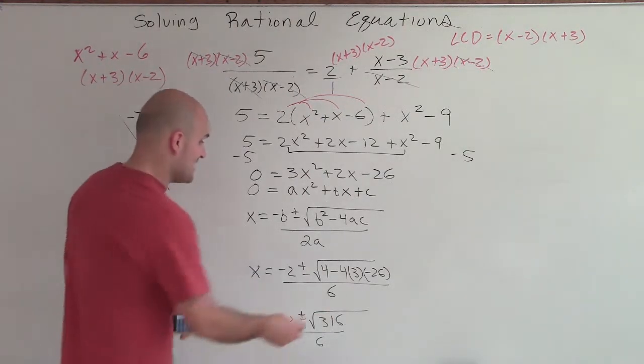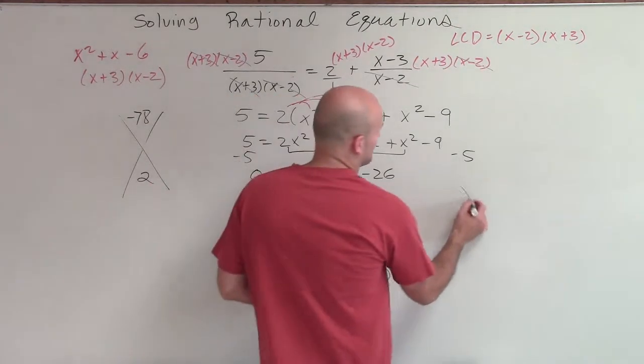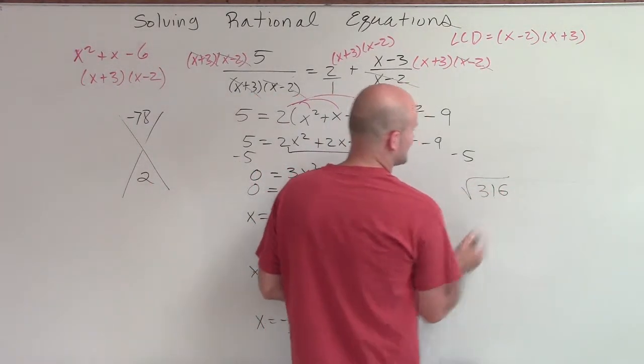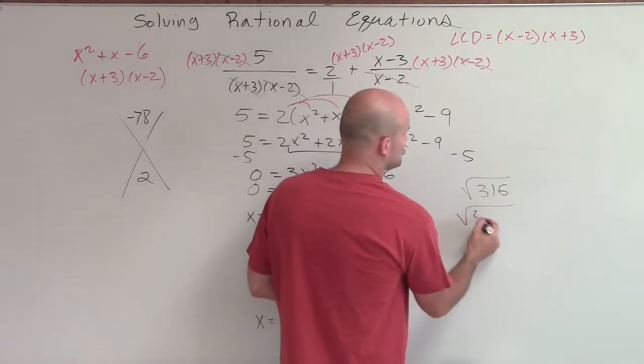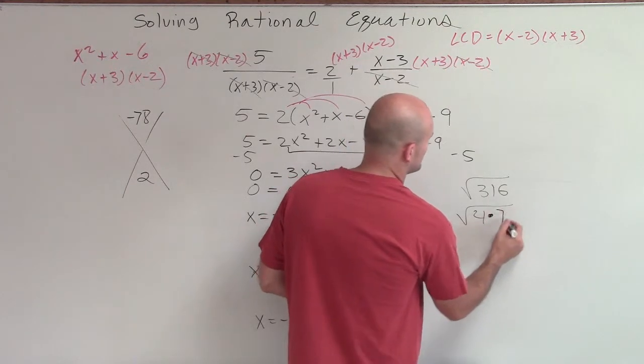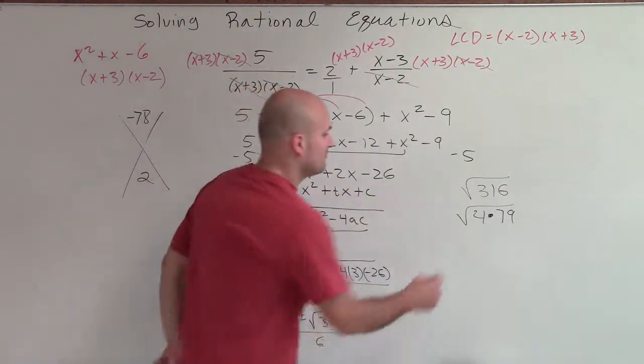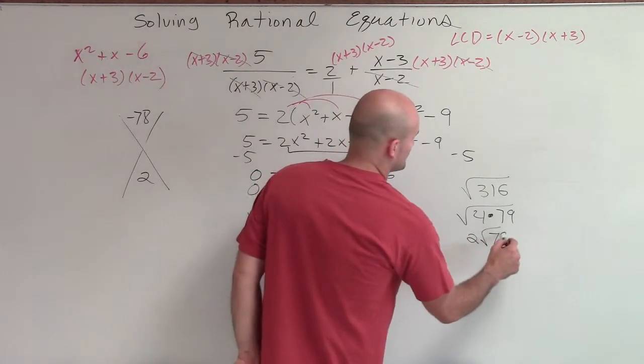Yes, I can simplify this. I can actually break this down 316. I can break this up and do the square root of 4 times the square root of 79. Then I can take the square root of 4, which would be 2 radical 79.